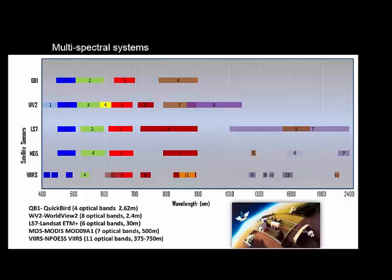So multispectral systems collect EM radiation at these discrete bands, and different systems collect information at different bands. You can see that QuickBird, for example, at the top collects four spectral bands: three in the visible—blue, green and red—and one in the near infrared, whereas Landsat collects seven optical bands, three in the visible, one in the near infrared, and some short wave infrared.